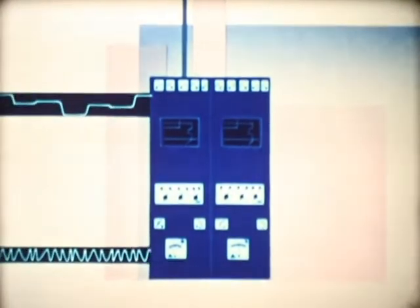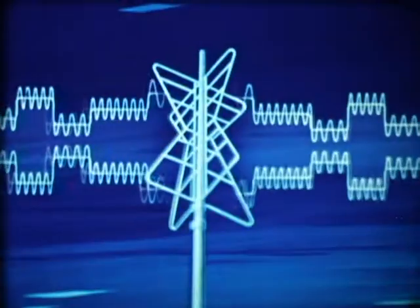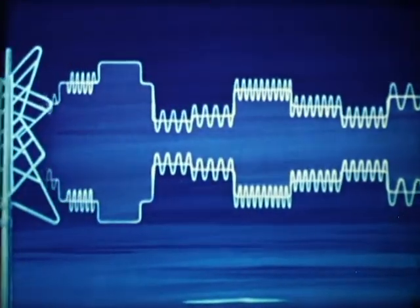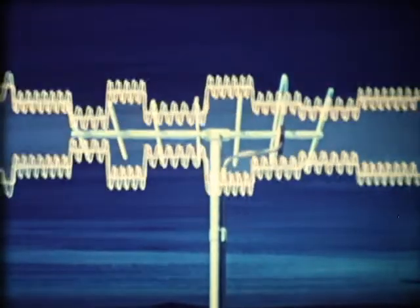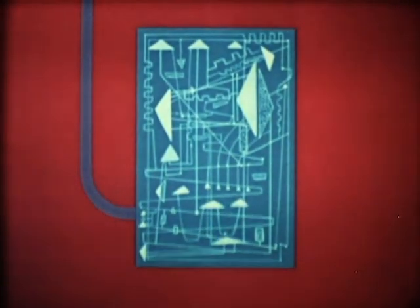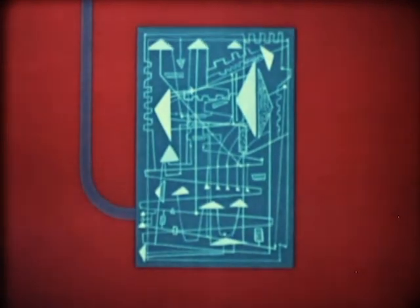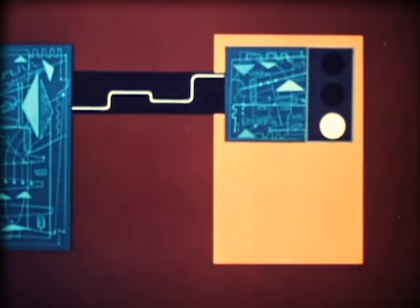For transmission, the color signal and the luminance signal are both modulated on the same electromagnetic wave. Black and white receivers utilize only the luminance signal. But we will now see what happens in a color receiver. Here, after the tuning and amplifying stages, circuits are present in which both signals are regained. The luminance signal and the color signal.